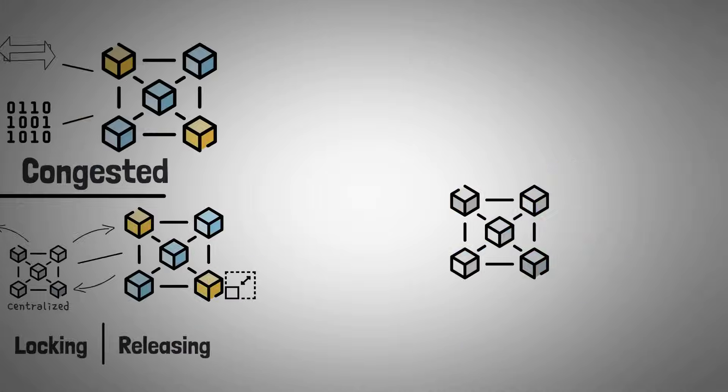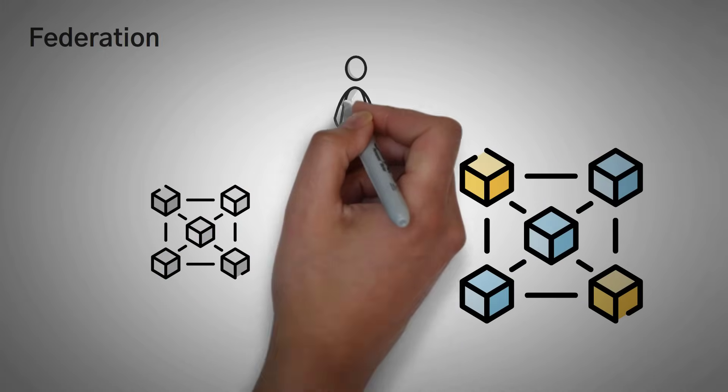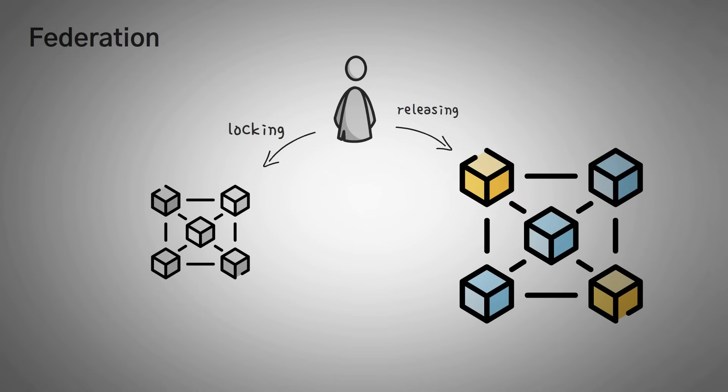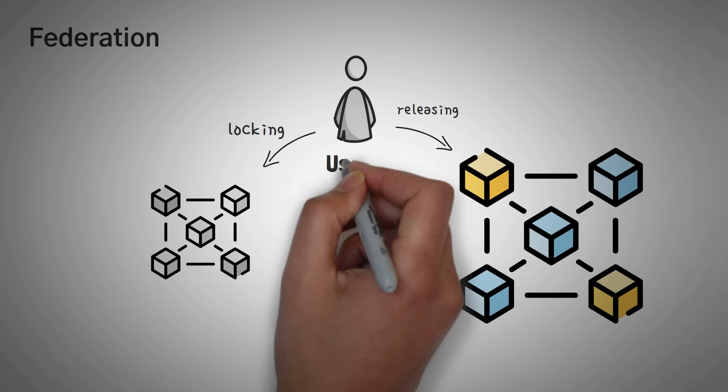This brings us to our next point, the federation. A federation is the technical term for the middleman that is in charge of locking and releasing those funds and assets between the two chains. Now, not all sidechains need a federation, but many of them do because they're quite useful.